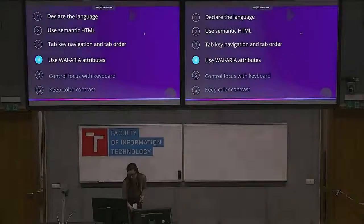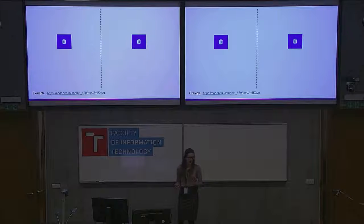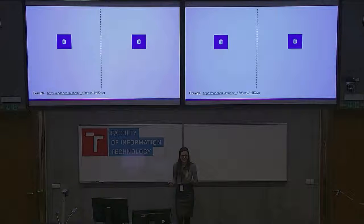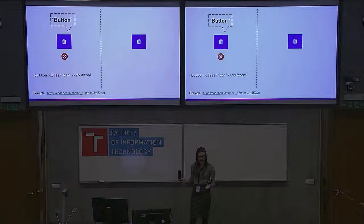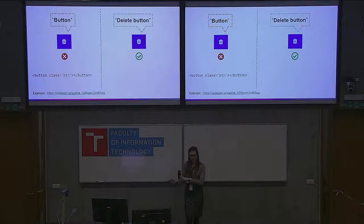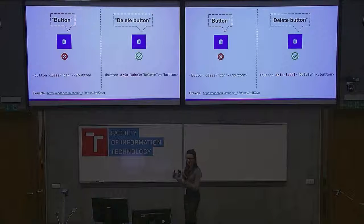Using ARIA attributes: here we have two buttons with a trash icon. We can assume clicking it removes something, but a blind user has no visual information and can only rely on the screen reader. For the button on the left — using a button tag with no text, just an icon added with styles — the screen reader reads 'button' with no description. For the second one, it reads 'delete button' because I used ARIA attributes. Specifically, I used 'aria-label' and the screen reader will read whatever text you put inside it.